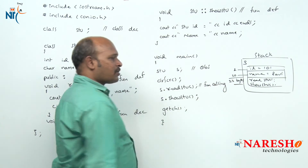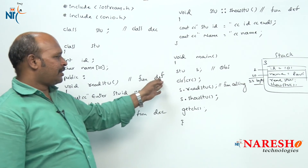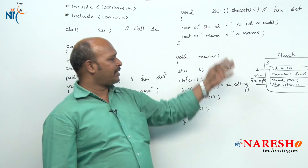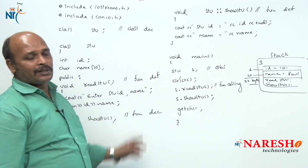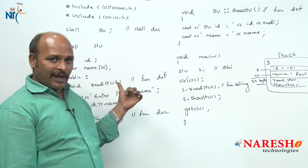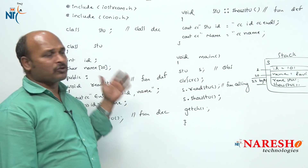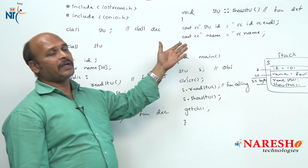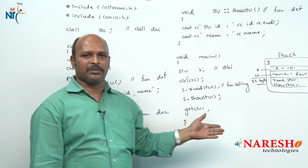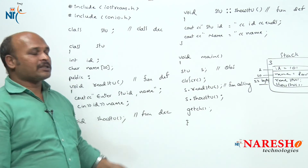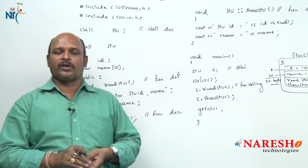This part is called function calling. So we have: declaration completed, definitions completed, and calling. This is the complete picture of a class — how to declare the class, how to define the class members, and how to call the class members. This is the example for class declaration and member function usage.